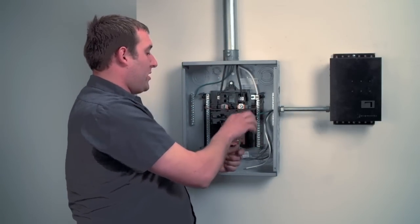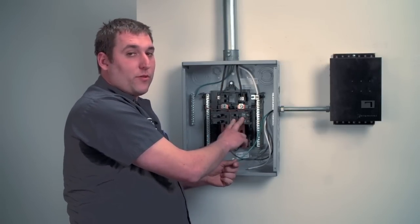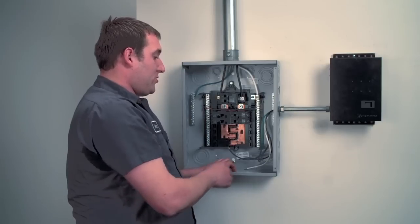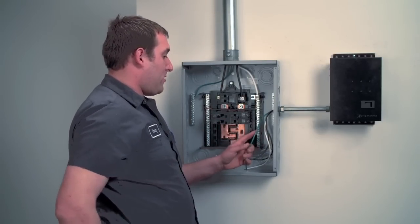Next, you want to make sure that your 2-pole 20-amp breaker—you can use a 2-pole 20-amp or a 2-pole 30-amp breaker—in this situation, we're using a 2-pole 20-amp. You want to make sure that breaker is off.